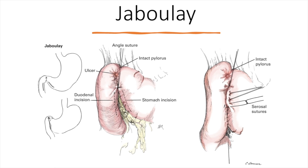The indication for the Jaboulay procedure is during cases in which the pylorus should be avoided — for example, when there is a very inflamed ulcer that would not allow a desirable pyloroplasty. You leave the pylorus intact, approximate the stomach to the duodenum, and gastric content travels directly from the stomach to the duodenum while completely bypassing the pylorus. The Jaboulay completely bypasses the pylorus, while the Finney and Heineke-Mikulicz render it incompetent.